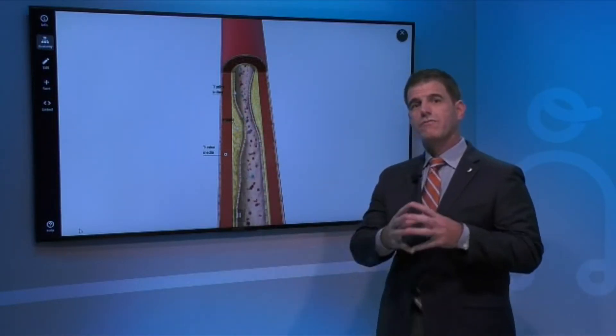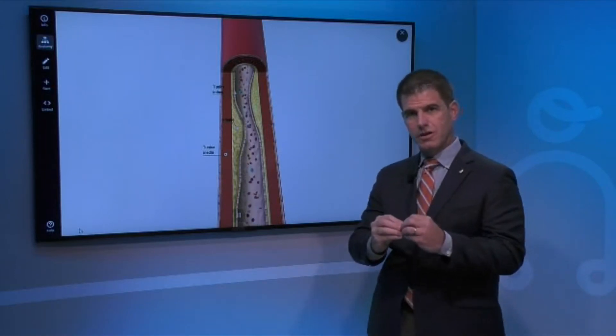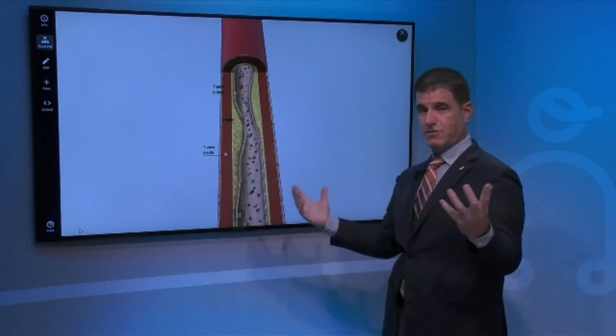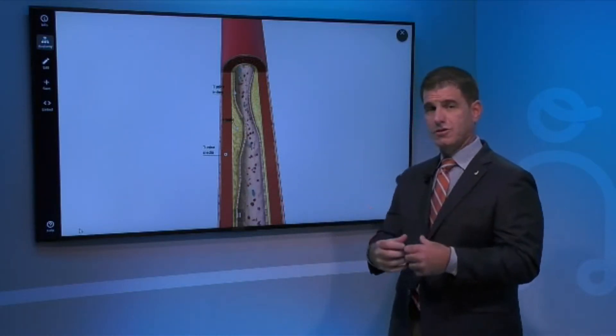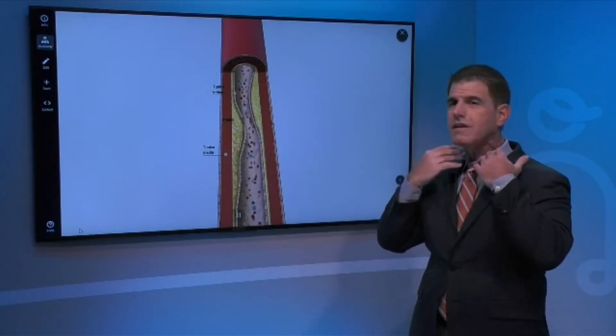Of course, we have microvascular small blood vessel circulation and we have macrovascular circulation. Macrovascular circulation are the big arteries in your heart, in your neck, in your brain.